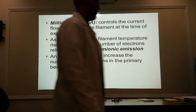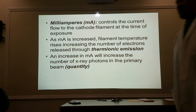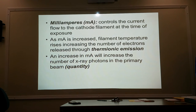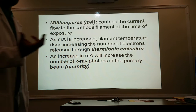Let's talk about MA. Milliamperage controls the current flow to the cathode filament at the time of exposure. With higher MAs, we're controlling the amount of electrons — the amount of electrons being boiled off from the filament through the process known as thermionic emission. The higher the MA, the hotter the filament gets, the more electrons are boiled off. We're controlling quantity, not quality — the number of electrons being boiled off.